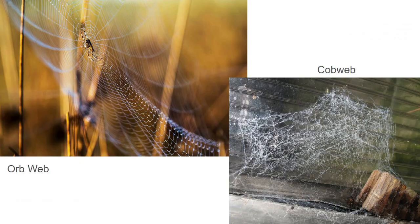Let's take a look at a comparison between a web spun by an orb weaver spider and one spun by a cobweb spider. Think about it from this perspective: what types of animals are each of these webs trying to catch? Remember, all spiders are carnivorous, so they get their food from other animals — usually bugs — that they catch and eat. Do you think these types of webs would be catching the same prey? Probably not. Most spiders that build webs that are not orb weavers build their webs closer to the ground to catch anything that might walk into them, like a beetle, an earwig, or some type of caterpillar.